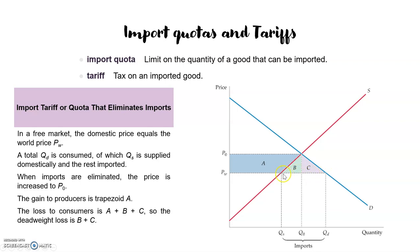So what happens with this difference between QD and QS? This will be the quantity imported from other countries in the world. So in a free market, the domestic price will be equal to Pw, a total of QD will be consumed, a total of QS will be supplied domestically, and the rest imported. When imports are eliminated because the government decides to impose a quota or a tariff that completely eliminates imports,